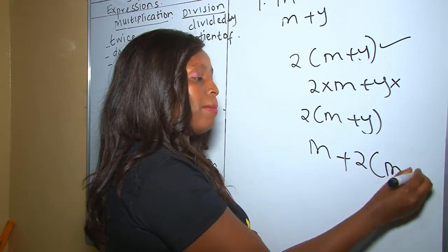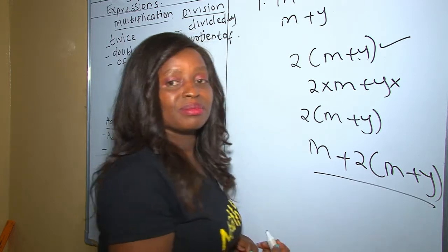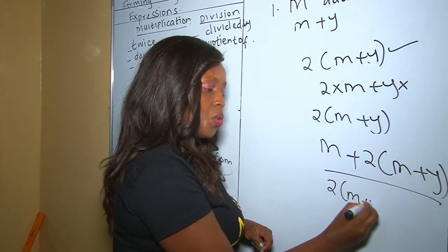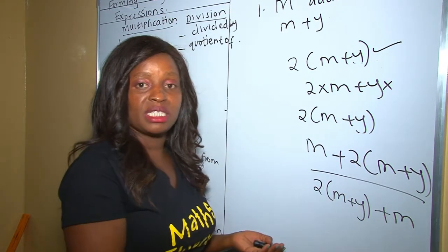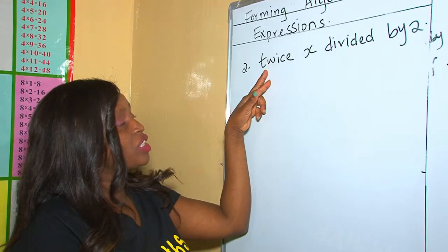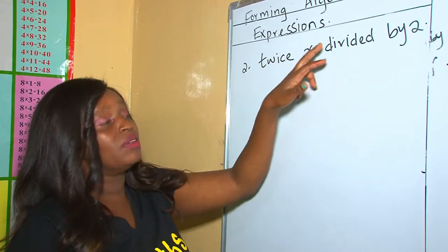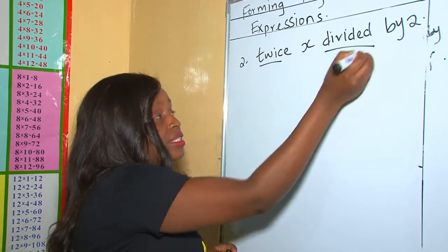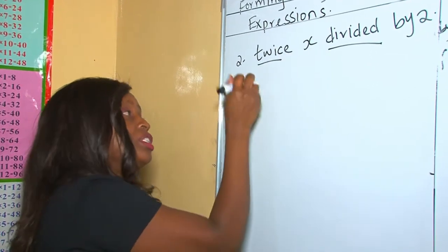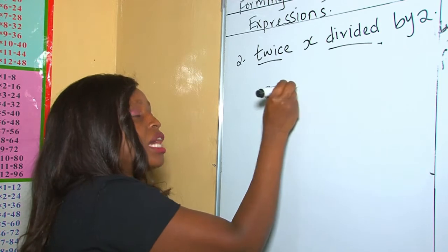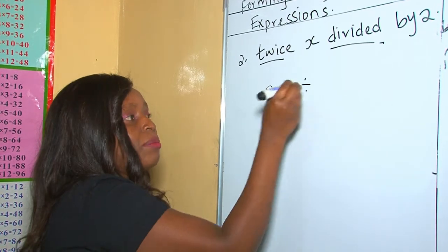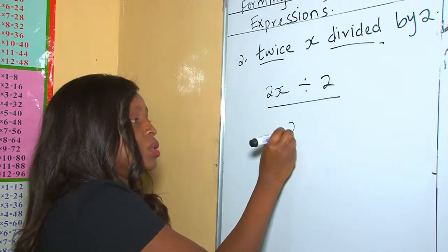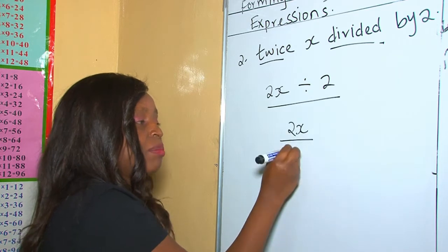You can as well also begin with 2(m plus y) plus m. It still means the same. Let's do another example. In this question, we have been told twice x divided by 2. Here there are two phrases: twice and divided. So twice x means x times 2, which is 2x, divided by 2, which means now you do the division, which is divided by 2, and this is our answer.